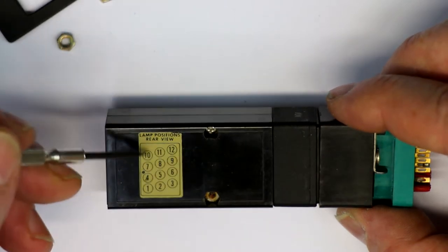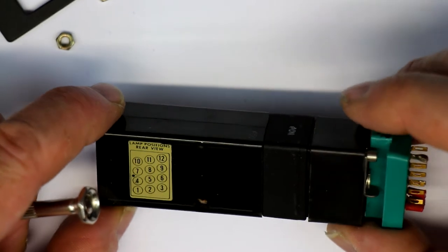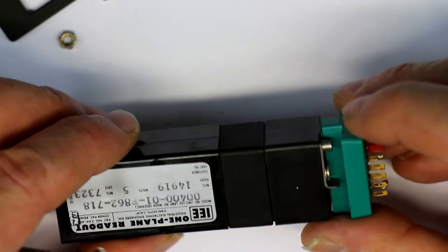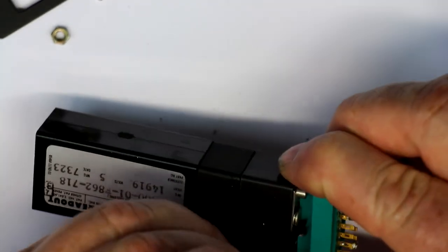Apparently there is an arrangement of three by four little bulbs, so that's the first surprise. Let's see how we further get along. Okay, here we have also some clips.